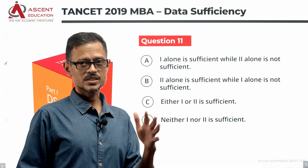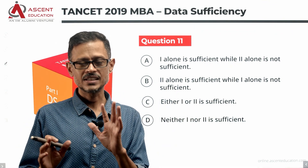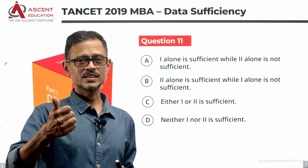Neither 1 nor 2 is sufficient — that is when D is the answer. Either 1 or 2 is sufficient — that is C. Let's quickly run through it.